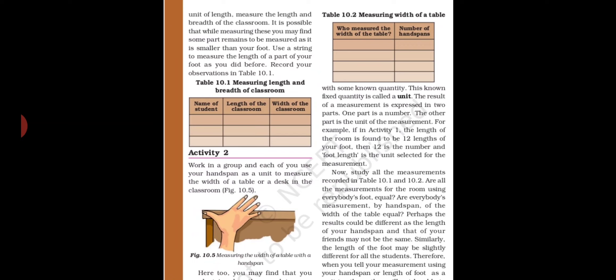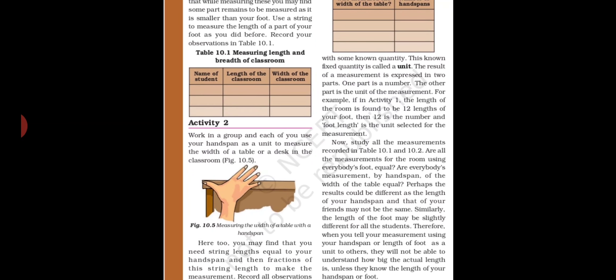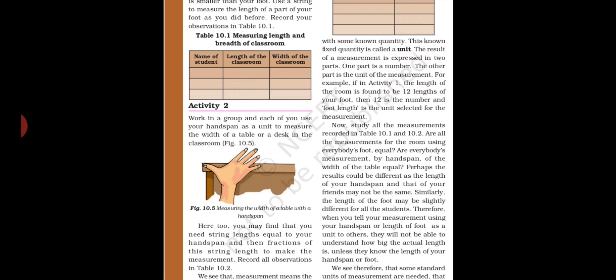Again there is a drawback: some people have bigger hands and some smaller, so everyone gets a different result. Instead of hand span, you can use a string to get a perfect result. Fold the string to find half the desk, fold again for one-fourth, and once more for one-eighth.